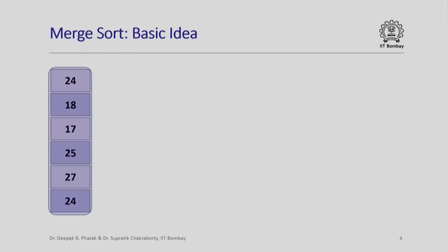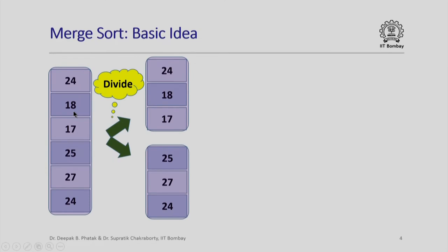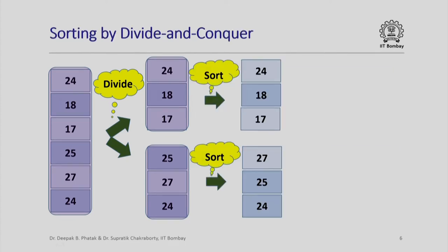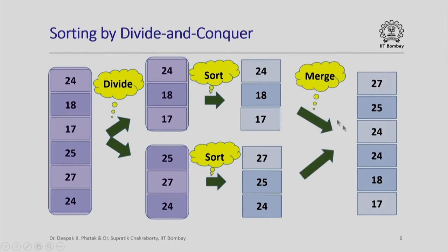Let us quickly recall the basic idea behind merge sort. We are given an unsorted array containing a certain number of integers. We first divide it into two sub-problems of almost the same size — if the original size was n, each sub-problem has roughly n/2 elements. We then sort the first half and the second half separately, and finally merge the two sorted sub-arrays into one larger sorted array containing all the original elements.